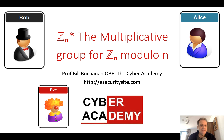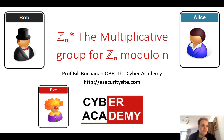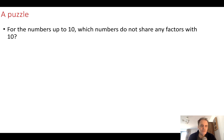Let's look at the multiplicative group Zn* modulo n. I'll give you a bit of background behind this symbol, which you often see in cryptography, and then at the end of the presentation we'll see how it's used. Here's a little puzzle: for the numbers up to 10, which numbers do not share any factors with 10?